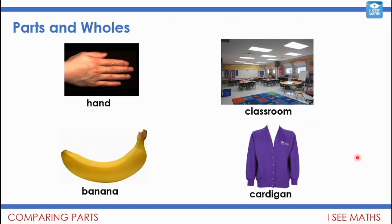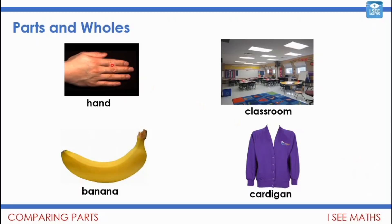Now it's your turn. Think about these contexts: a hand, a classroom, a banana, a cardigan. Come up with as many sentences as you can describing these things as a part and as a whole. For example — a hand is part of an arm and a finger is part of a hand. The classroom is part of a school and a table is part of the classroom. The skin is part of a banana and a banana might be part of a fruit salad. Part of a cardigan is the buttons — that's quite a small part — and a cardigan is part of your school uniform.